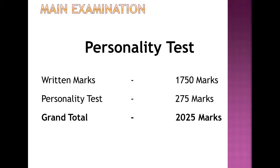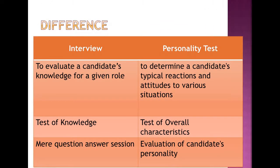The Personality Test carries 275 marks, and the total written score is 1750 marks, making the overall total score for the IAS examination 2025 marks. Regarding the Personality Test — unlike a normal job interview where the candidate's knowledge is analyzed, here the candidate's typical reactions and attitudes are analyzed. That is the basic difference: a normal job interview tests knowledge, whereas the IAS Personality Test analyzes characteristic features and the candidate's overall personality.